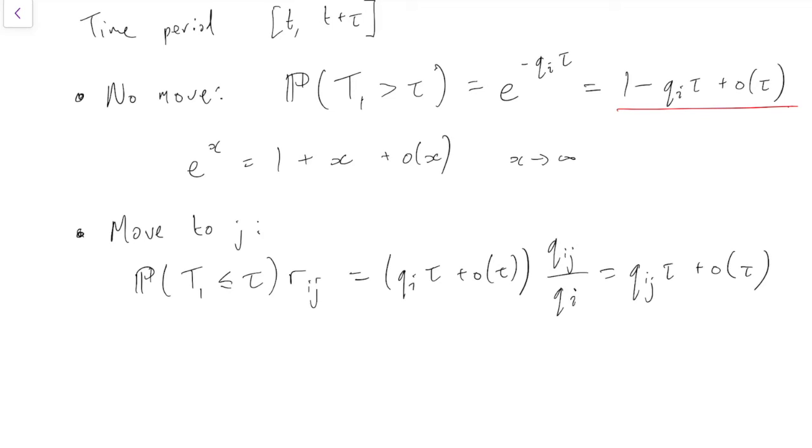Note that any other way we can move to j, for example by moving to k first and then to j, those are all lower order terms.